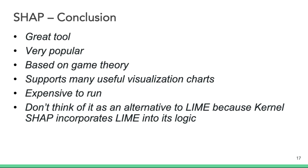The key takeaway is that SHAP is a great tool that has made important contributions to the field of explainable AI. Its popularity in academic research means it's relatively well understood compared to other methods. It includes many useful visualizations and has theory to back up the explanations it provides. It is expensive to run, and it is a unifying method — so don't think of it as an alternative to other methods.